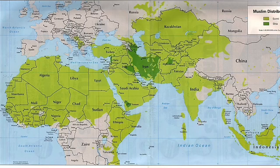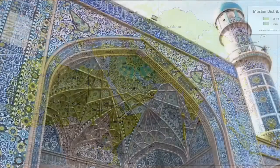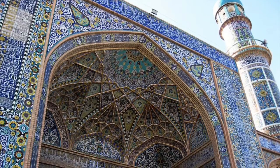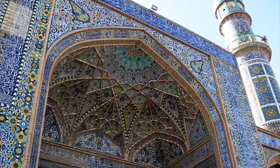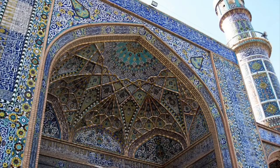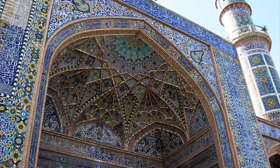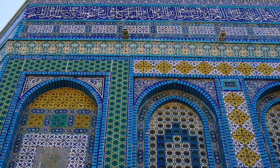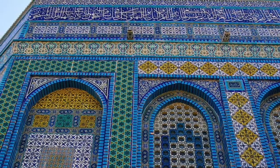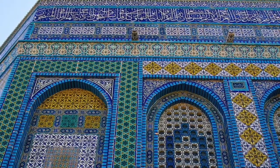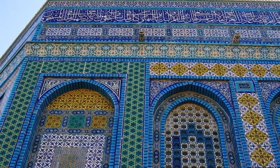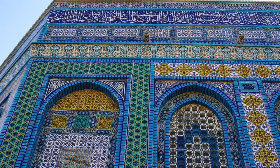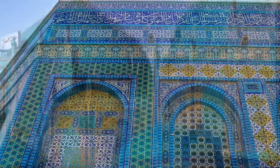However, people practice Islam right here in America as well. These are some Islamic mosques, or kind of like their churches. You can see that they are absolutely covered in tiles. Artists in ancient Islam created this wonderful tile work by hand, painting and creating each one of these tiles on the outside of these buildings or mosques.